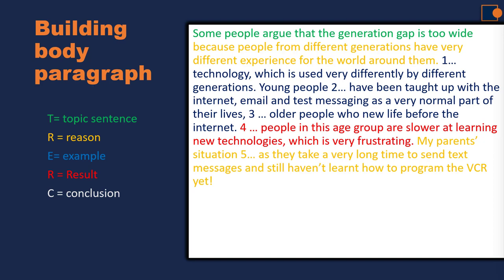You can give two reasons, two examples, or two results depending on how you organize your paragraph. But make sure your body paragraph contains most of these elements: topic sentence, reason, example, and result. Conclusion is optional, but you should write at least one of these closing elements. This is usually your final statement in the paragraph.